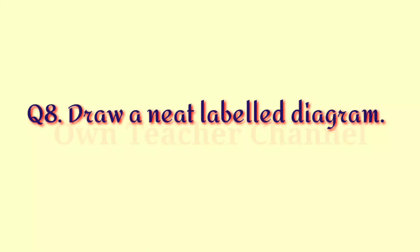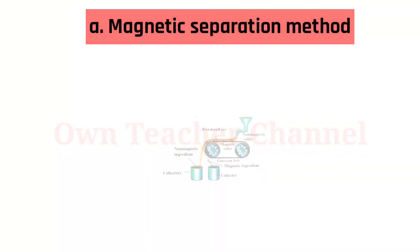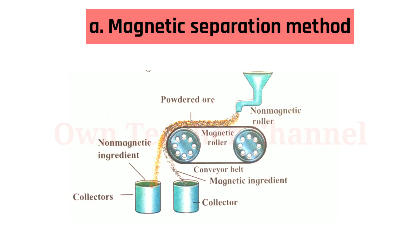Question 8: Draw a neat labeled diagram. Magnetic Separation Method: This method requires an electromagnetic machine. The main parts are two types of iron rollers and a conveyor belt moving continuously around them. One roller is non-magnetic while the other is electromagnetic. The conveyor belt is made of leather or brass. The powdered ore is poured on the conveyor belt near the non-magnetic roller, and two collector vessels are placed below the magnetic roller.